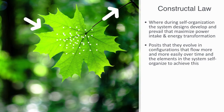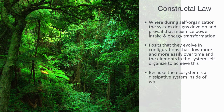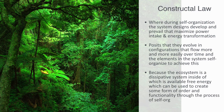We can ask then, why do all the different parts of an ecosystem appear to fit together so well? What is responsible for organizing all the parts, their functional connections, and resulting feedback loops, in a way that allows everything to function together? The amazing answer is that ecosystems organize themselves, because the ecosystem is a dissipative system inside of which there is available free energy. This exergy can be used to create some form of order and functionality through the process of self-organization.